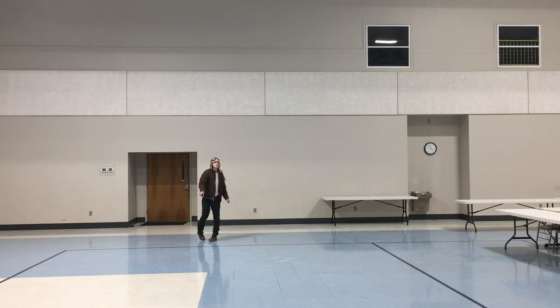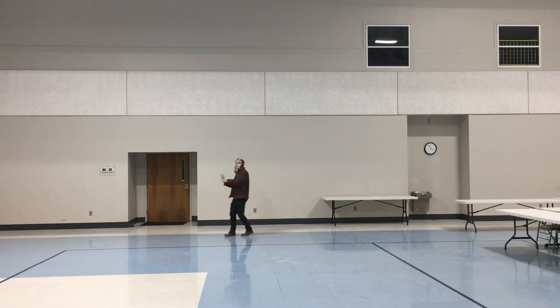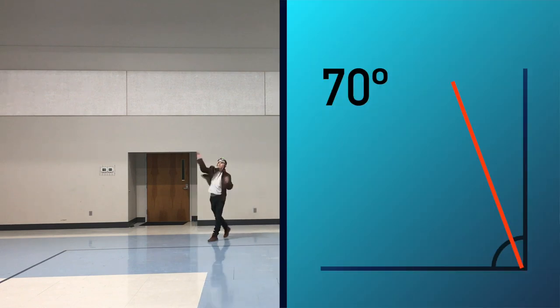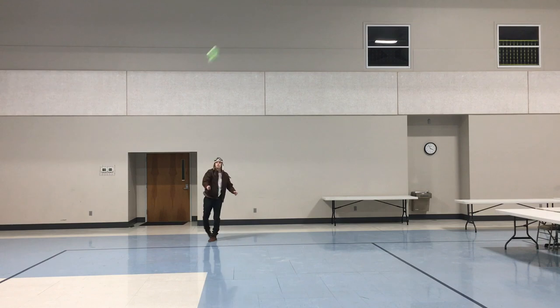And finally, in this third example, I get it right. You can see that as I release my plane, my arm is at a 70 degree angle. The plane flies in a complete circle, and I'm able to catch it.